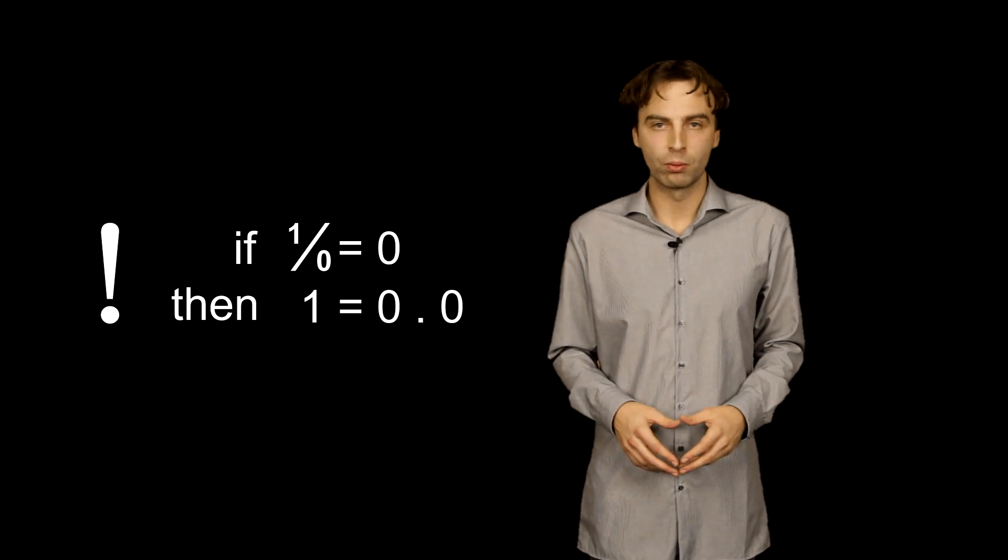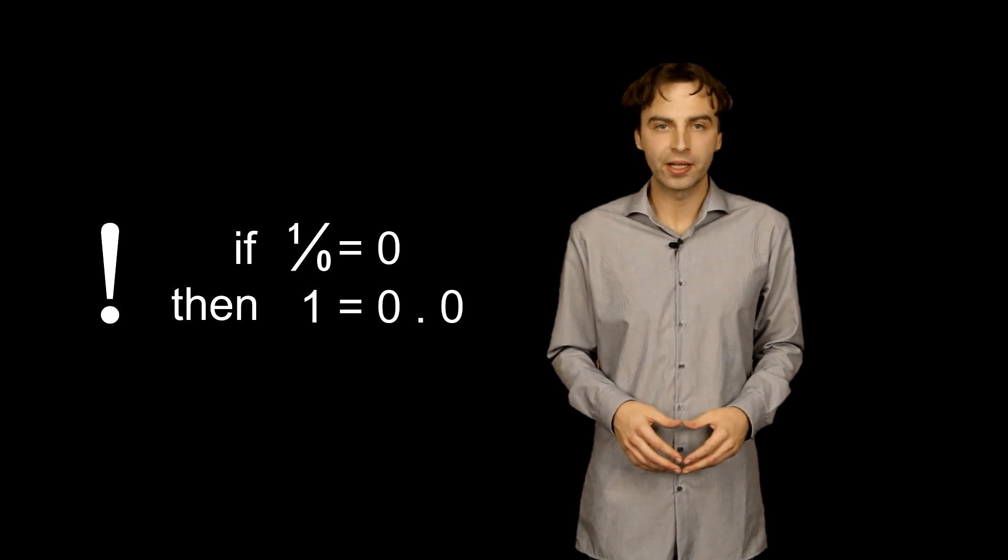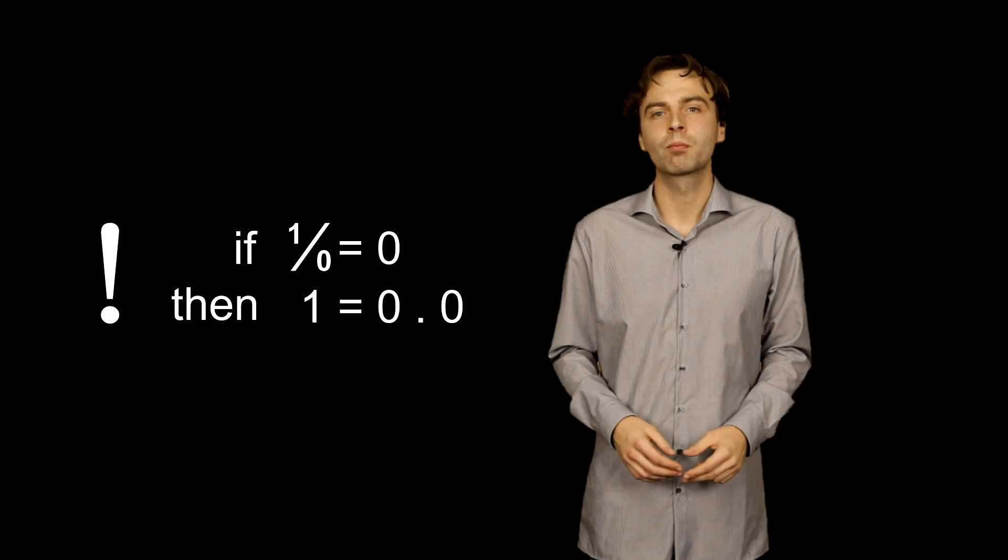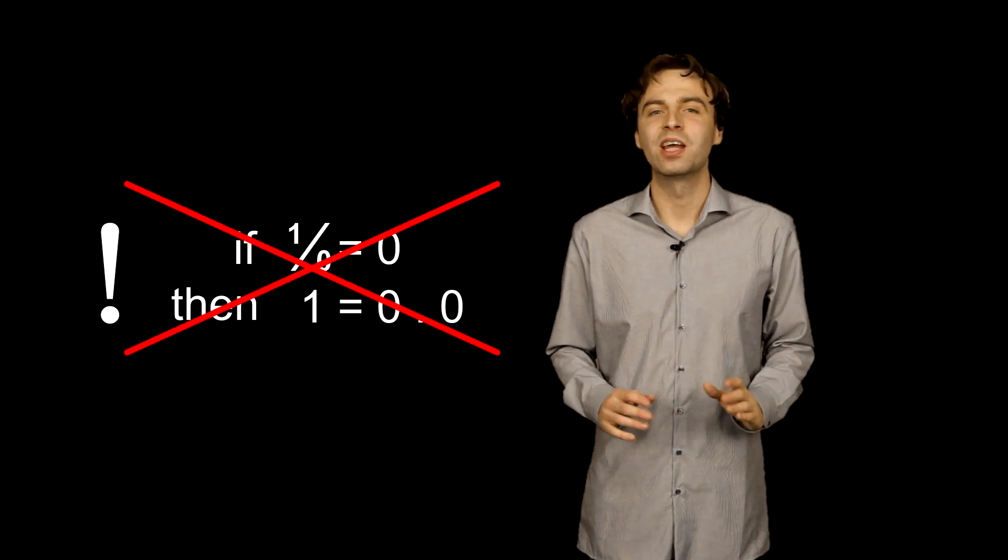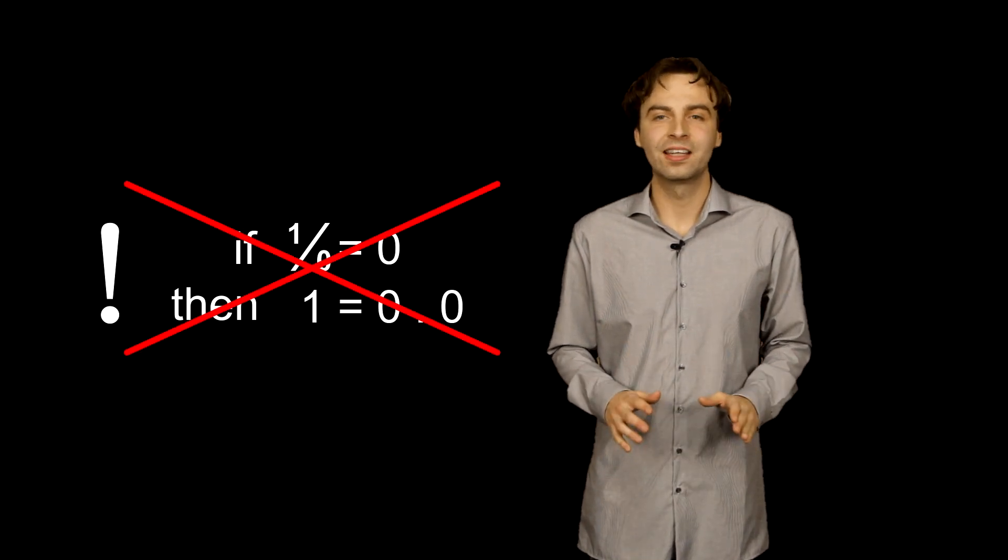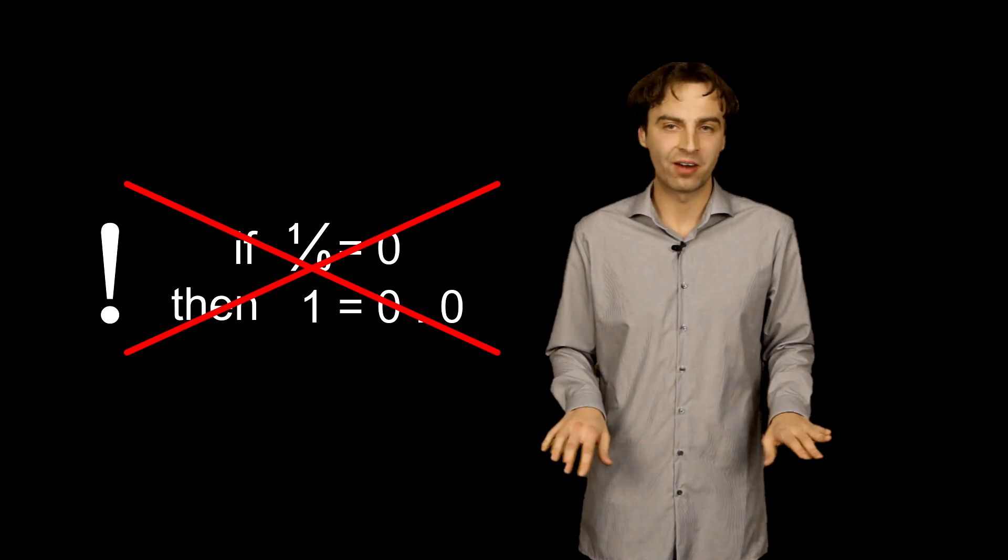which means that I can say that anything divided by zero equals zero. I can hear you scream. You cannot divide by zero because that would start a chain reaction of paradoxes. But that's not true. In modular arithmetic, I can divide by zero without any paradox.